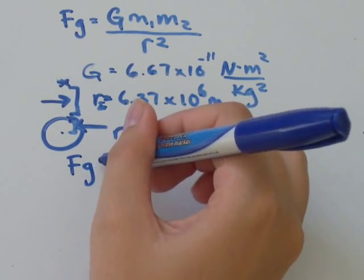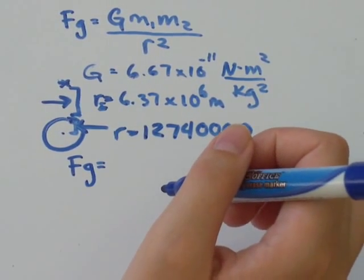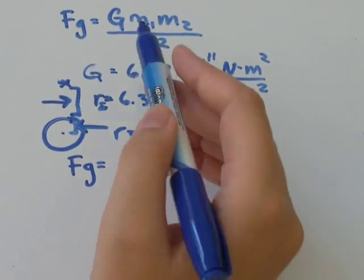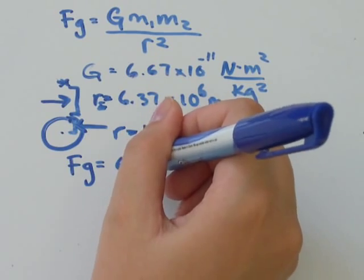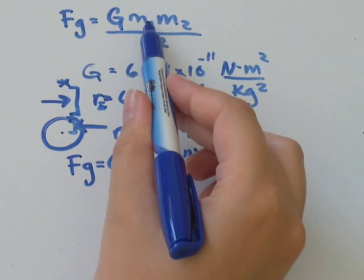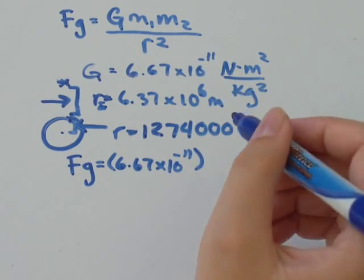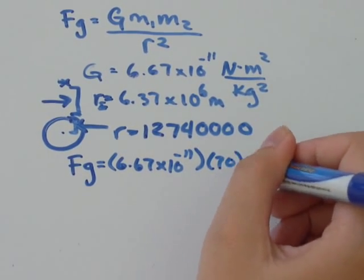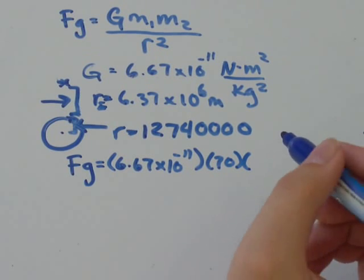So we want the force of gravity that the objects exert on each other. So g, 6.67 times 10 to the negative 11 times the mass of 1. The mass of the asteroid was 70. And the mass of the other, the mass of the Earth, is always 5.98 times 10 to the power of 24 kilograms.